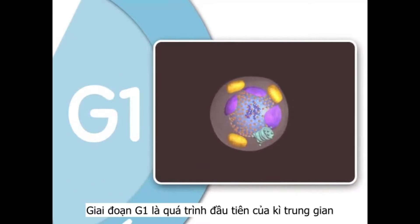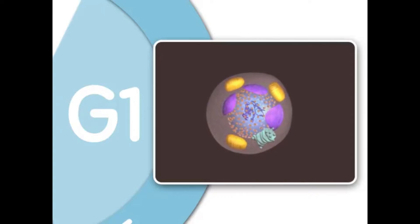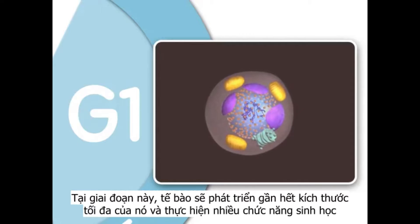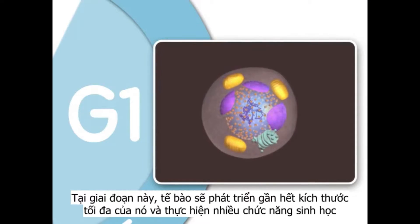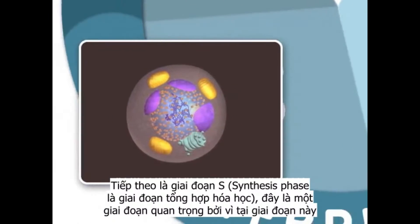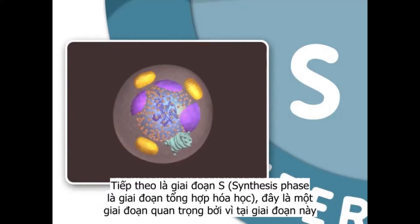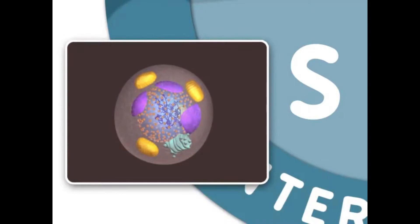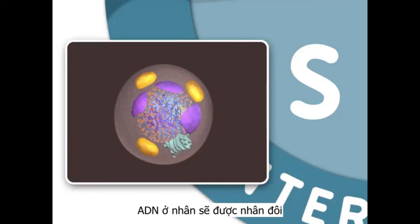G1, or gap 1, is the first growth stage of interphase. In G1, the cell grows to nearly its full size and performs many of its specific biochemical functions that aid the organism. Next is the S, or synthesis phase. This is an important stage because it is during the S phase that DNA in the nucleus is replicated.